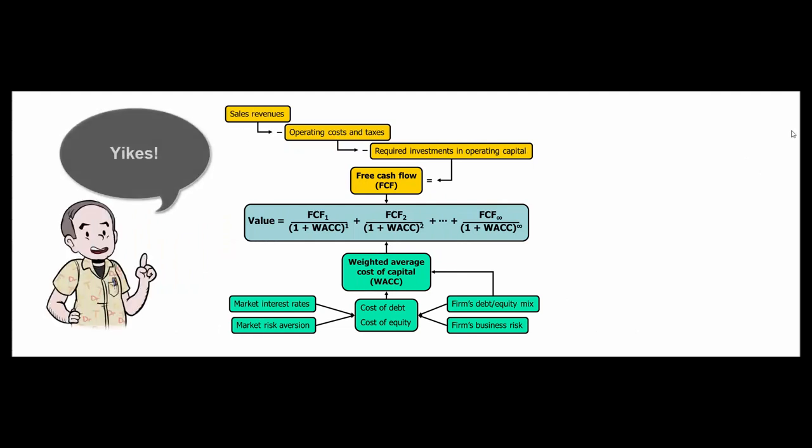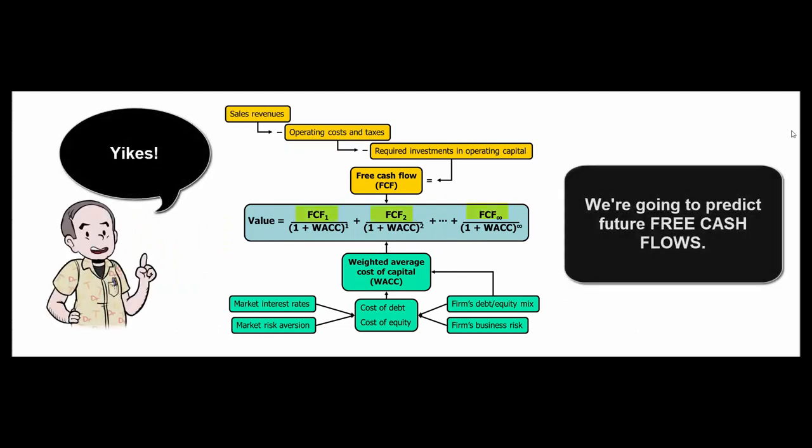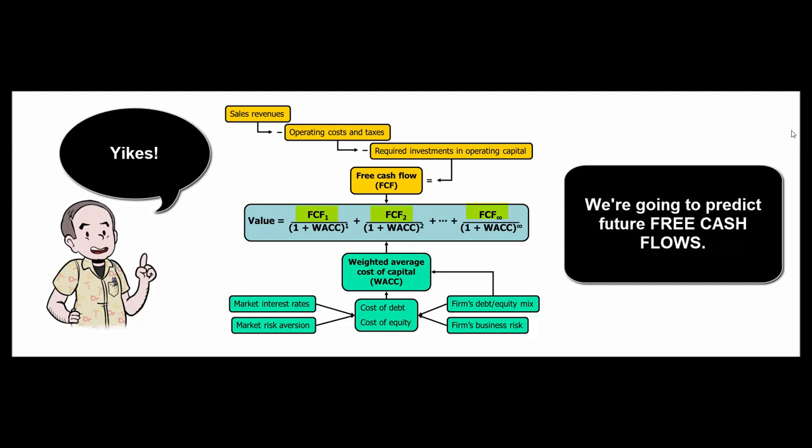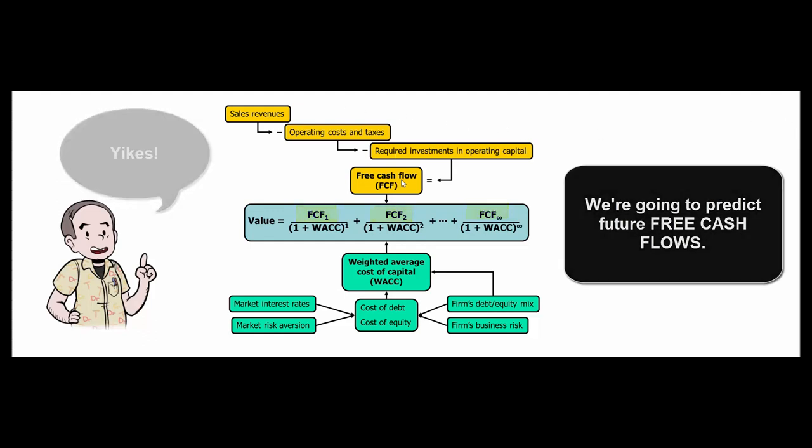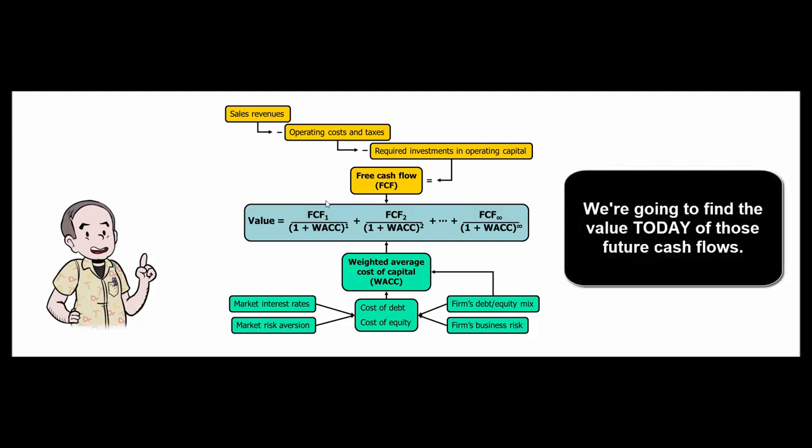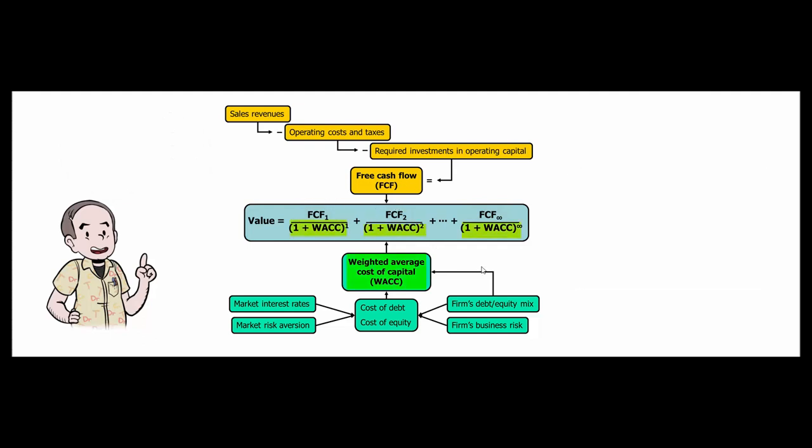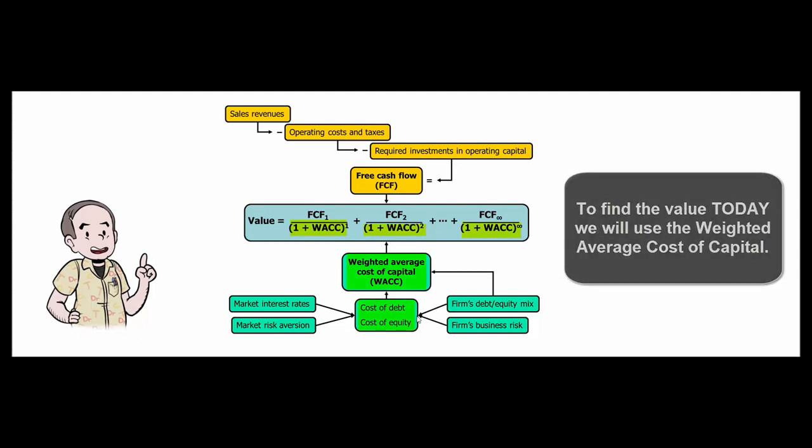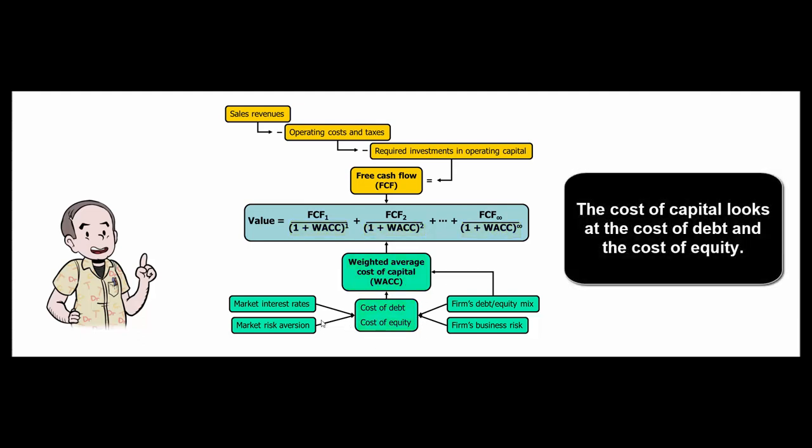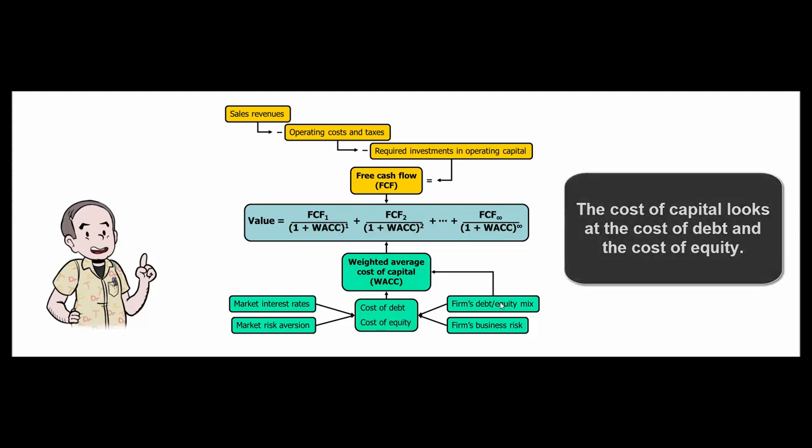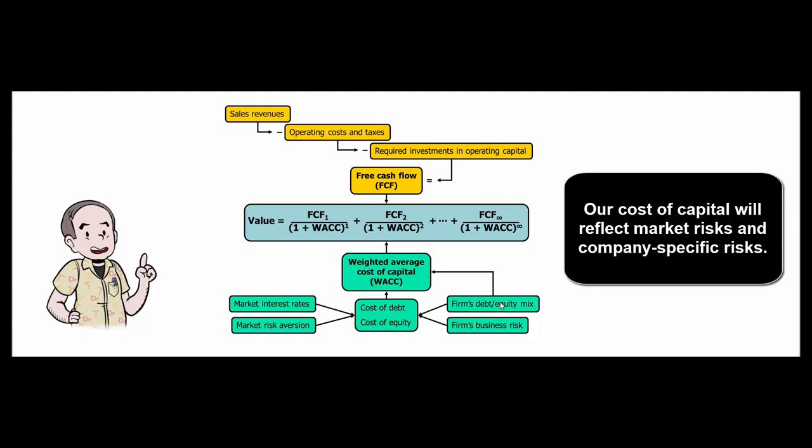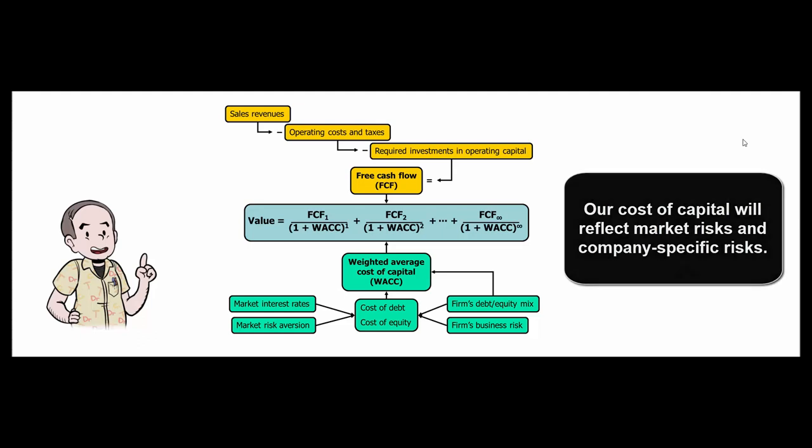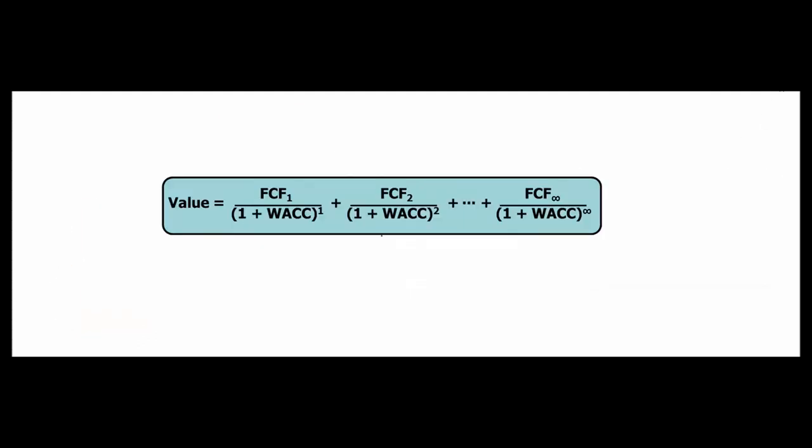Here's the concept of intrinsic value all in one graphic. We're going to calculate our free cash flow for the company. We're going to find the present value of it, discounted at the weighted average cost of capital, which is going to be the weighted average cost of our debt and our equity. Those are going to reflect market interest rates, market risk aversion, the debt-equity mix of our company, and the company's business risk. That's a lot to digest. Let's break it down and let's just take a look at this part.